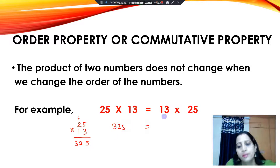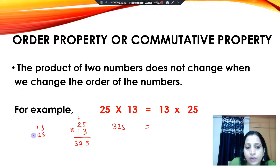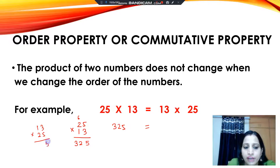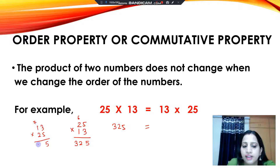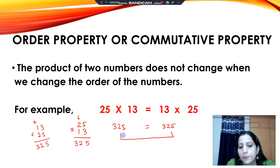Now we will multiply 13 by 25. So 25 multiplied by 3 is 75, write 5 carry 7; 25 once is 25, and 25 plus 7 is 32. So this means 325. Hence we can say that we can multiply the numbers in any order and our product will always remain the same.